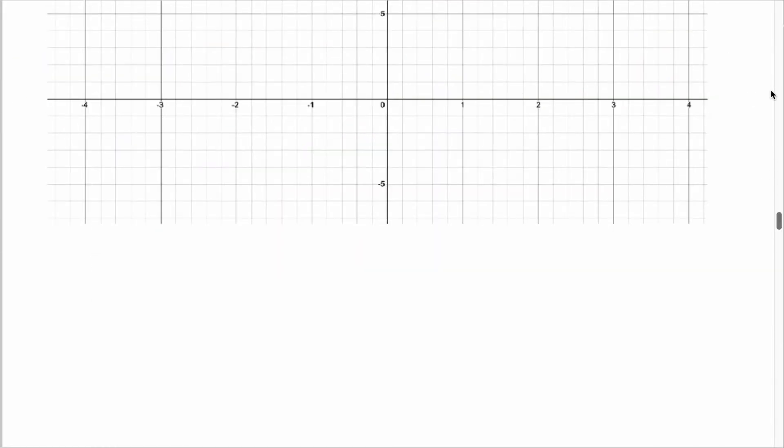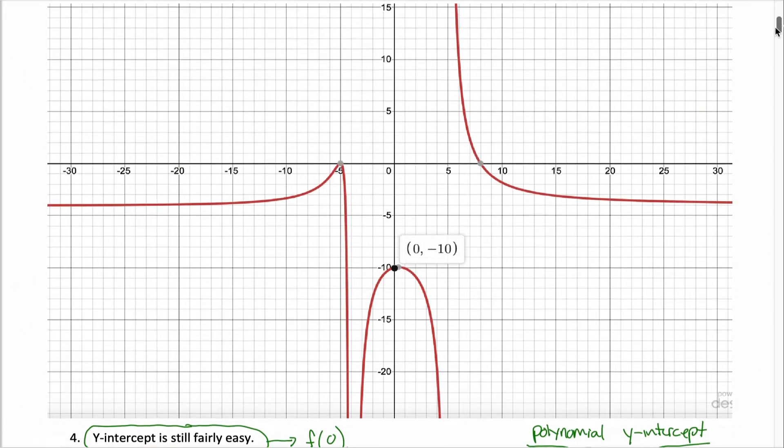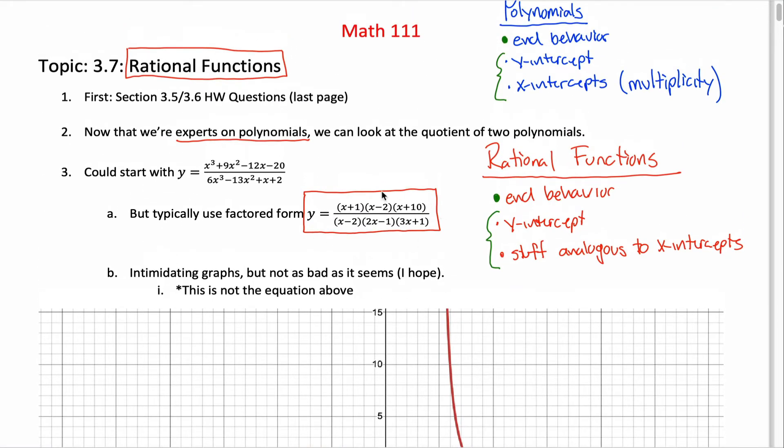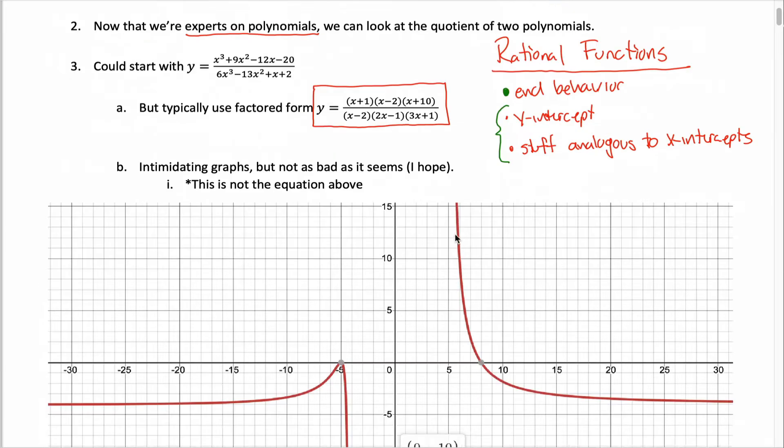In the very first video in this section, I started you out with the graph of a rational function to try to make the argument that these things are kind of crazy-looking and they can be kind of challenging to graph. And in the three or four videos since then, we've really learned all the important features that we want to make sure that a graph of a rational function represents. So our goal is to start out with the equation of a rational function and transform that into the graph of a rational function.